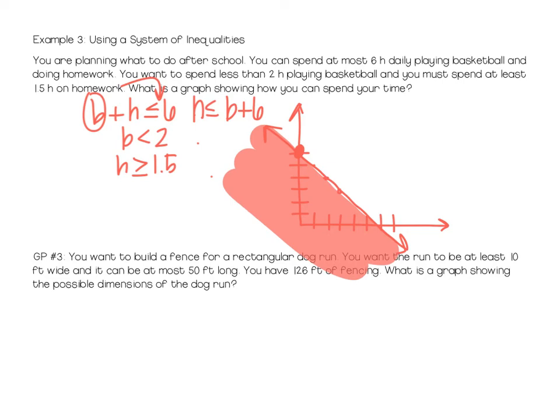Okay, for B is less than two, our B is our X, so we're going to put two on our X-axis, a point there. And if B is X, and that's a vertical line, so we're going to put a dotted line through that point. And then we're going to shade every number that's less than two, so that's this way.